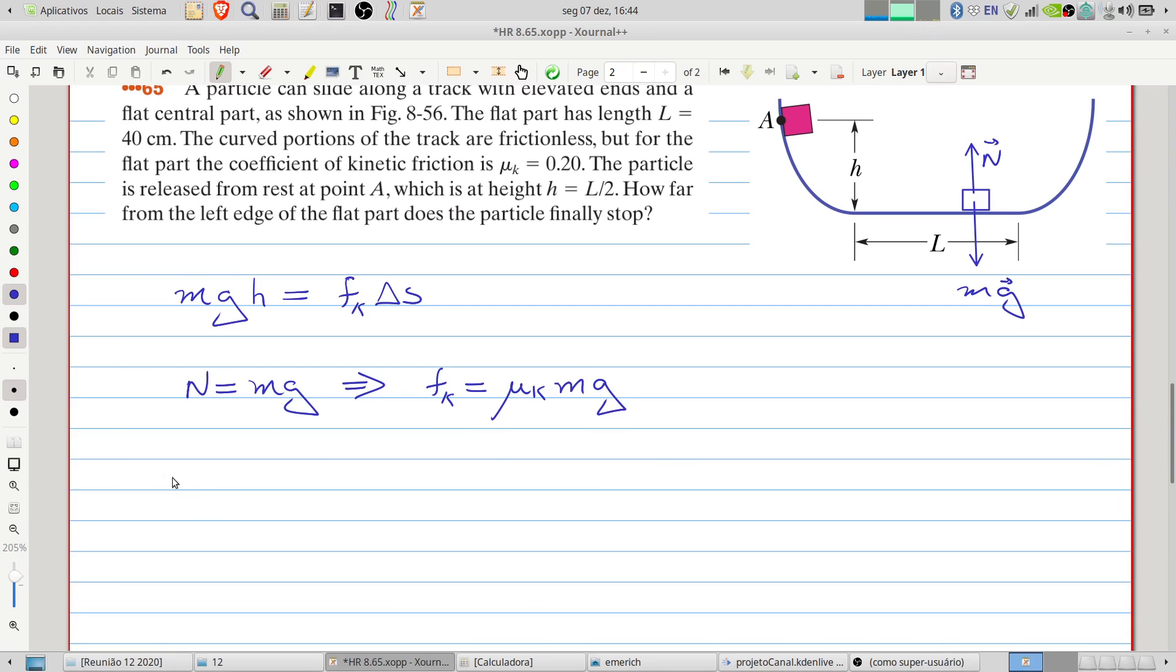Therefore, mgh equals L divided by 2, so L divided by 2—this equals the kinetic friction coefficient multiplied by mg multiplied by the total displacement of the particle. We can cancel these terms. Therefore, the total displacement will be L divided by 2 divided by μk, which is 0.2.